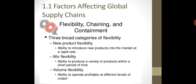New product flexibility is the ability to introduce new products into the market at a rapid rate, in a short period of time. There are different types of products. There are many fast-moving goods — FMCGs — like Nestle, P&G, and Unilever.